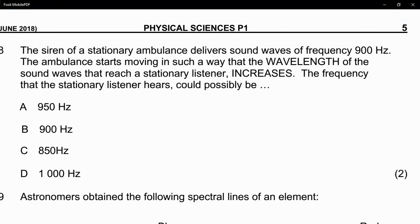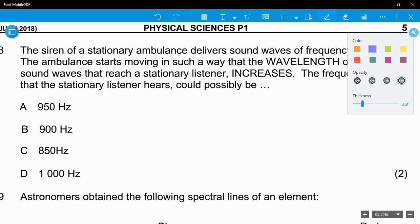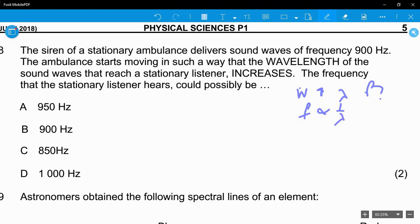Question 1.8: The siren of a stationary ambulance delivers sound waves of frequency 900 Hz. The ambulance moves in such a way that the wavelength of the sound waves that reach the stationary listener increases. The frequency that the stationary listener hears could possibly be... This deals with frequency again and Doppler effect. What we're saying is wavelength increases, and wavelength increases. What happens to the frequency? If the wavelength increases, that means frequency must decrease. Remember, frequency is inversely proportional to wavelength. So if the frequency was 900 Hz and you're saying the wavelength increases, that means frequency must decrease. It must be less than 900 Hz. The only one is C, 850 Hz.